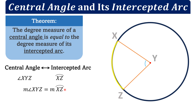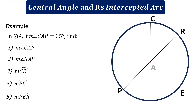Let's have an example. In circle A, if the measure of angle CAR is equal to 35 degrees, find the measure of the following. Starting with number one: the measure of angle CAP. This is angle CAP.